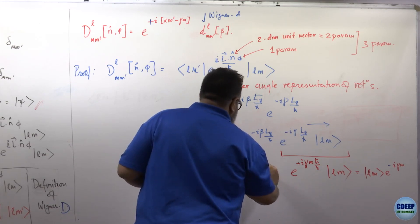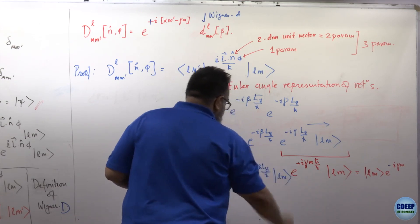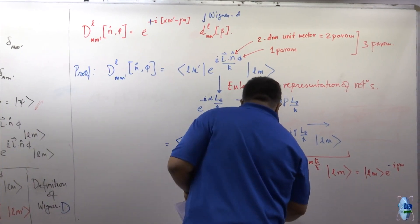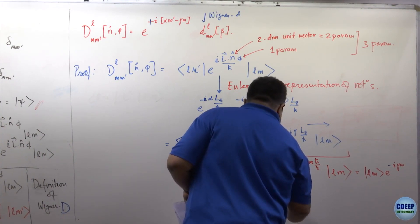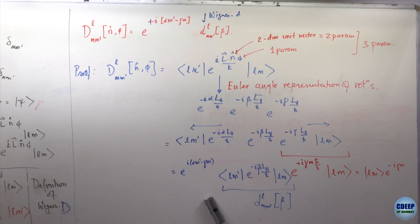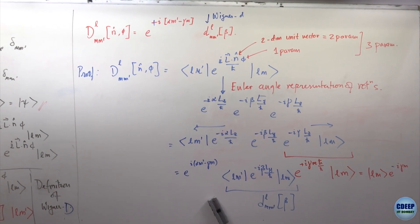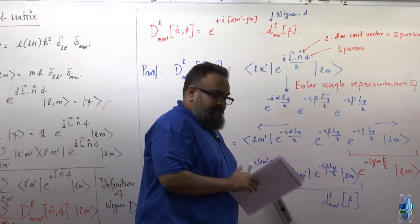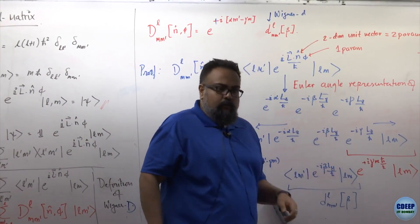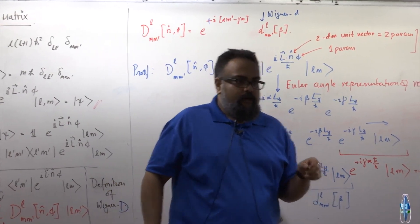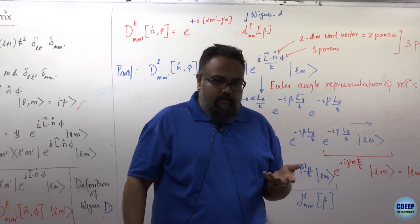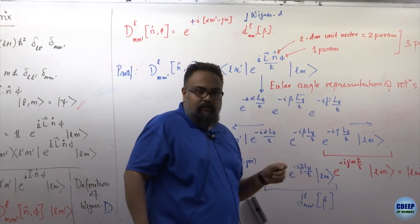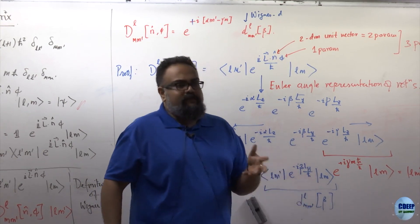So I can now evaluate D. All I have to do is take the spin-half case. If I replace L_y with ℏ·sigma_y/2 — that is the angular momentum operator for spin-half particles — then this becomes e to the minus i·beta·sigma_y/2, which equals cosine(beta/2) times the identity minus i·sine(beta/2) times sigma_y.